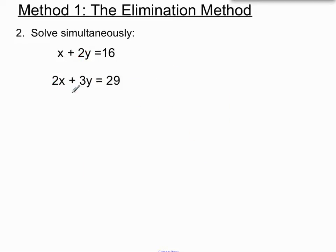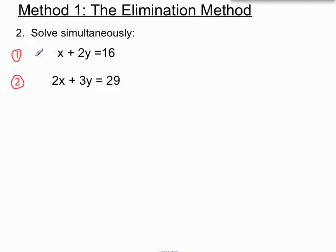The next example is a little trickier. We don't have either the y values or the x values matching up, so we're going to have to adjust one of the equations to make that happen. We'll number these equations because we're going to create a third equation. Now in order to have our x values match up, what I'm going to do is multiply every term in equation 1 by 2.